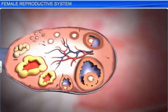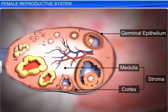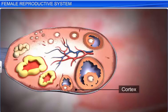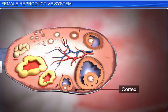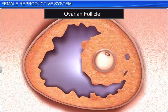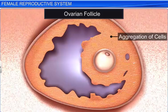Each ovary is covered by an outer thin layer called the germinal epithelium. The germinal epithelium encloses the ovarian stroma, which is further divided into the outer cortex and the inner medulla. The cortex consists of many ovarian follicles in different stages of development. The ovarian follicle is the basic unit of the female reproductive system, and is composed of roughly spherical aggregations of cells found in the ovary.